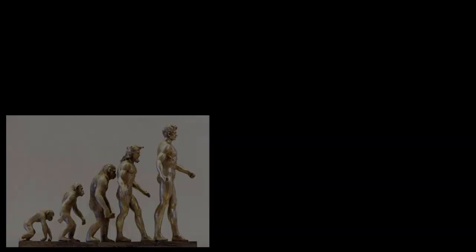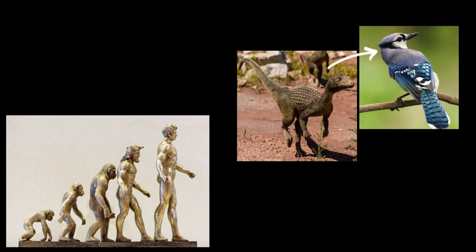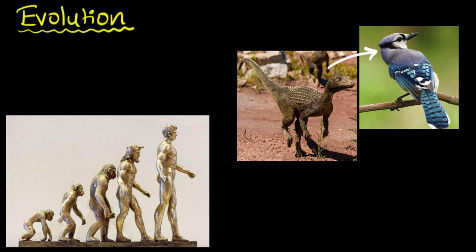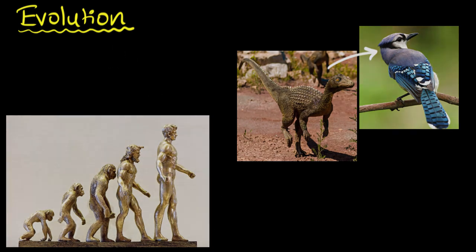You may have heard of things like man evolved from apes, or maybe something like birds evolved from dinosaurs. But what exactly is this evolution, and what causes it to happen? In this video, we're going to learn exactly what evolution is by taking a much simpler example.